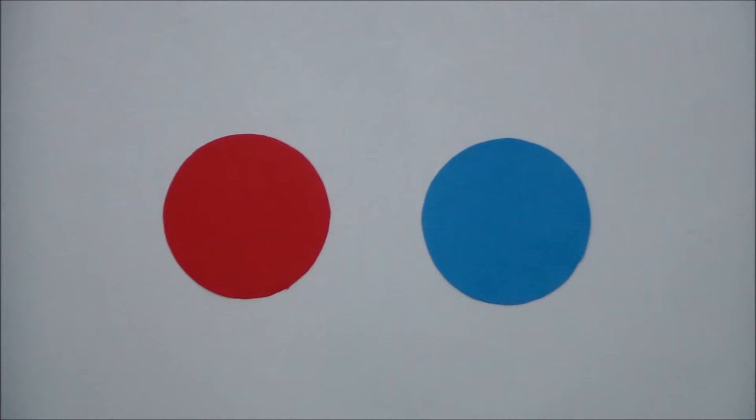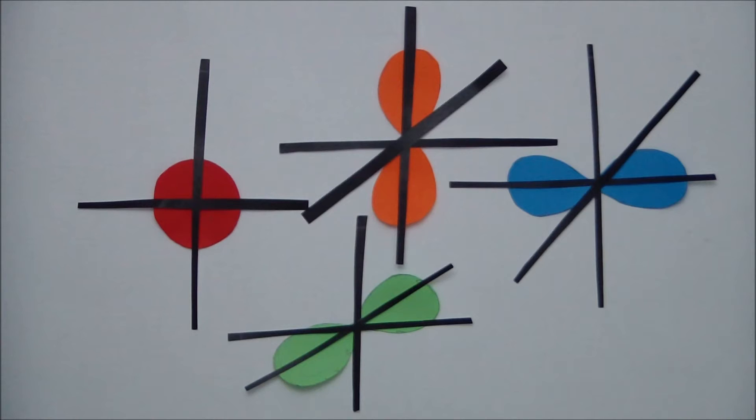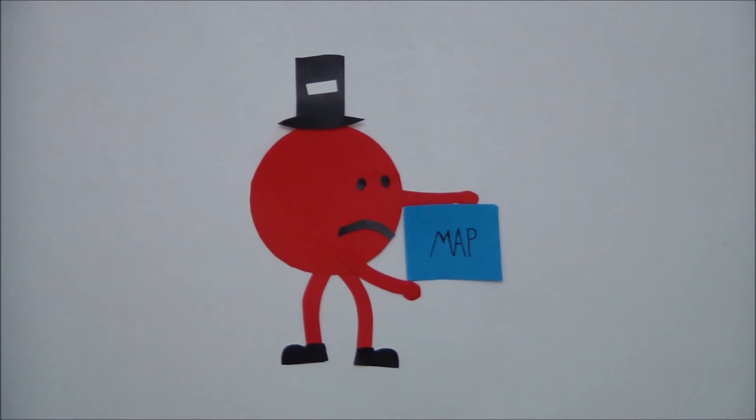Each of these shells is made up of subshells, and each subshell contains a certain number of orbitals. These orbitals are not so much like planets orbiting the sun, rather they are regions of space in which the probability of finding an electron is high. To describe an electron's position within this structure, we use four so-called quantum numbers.